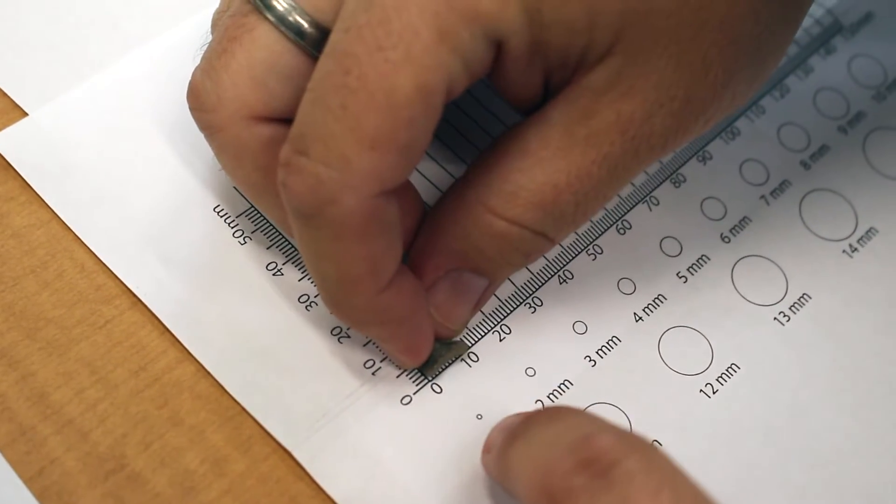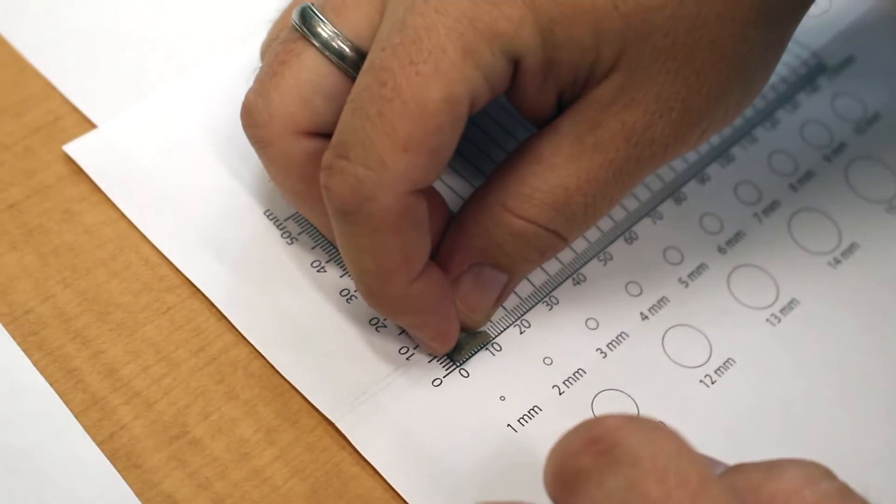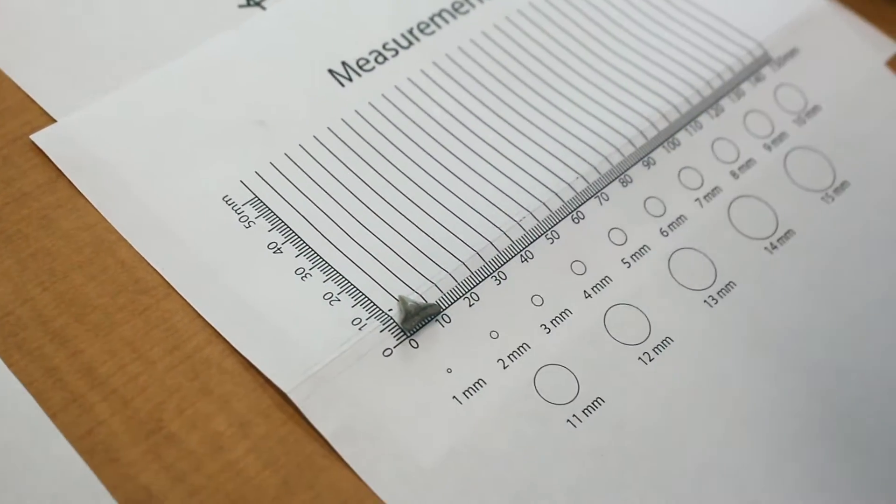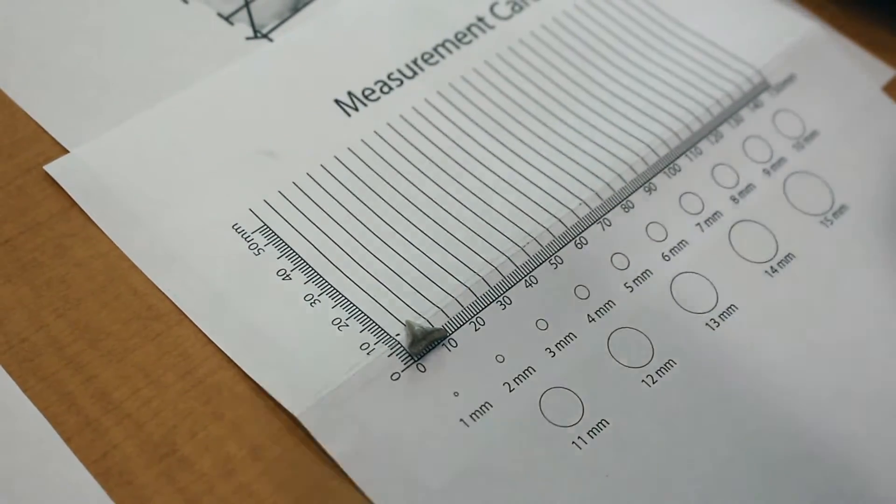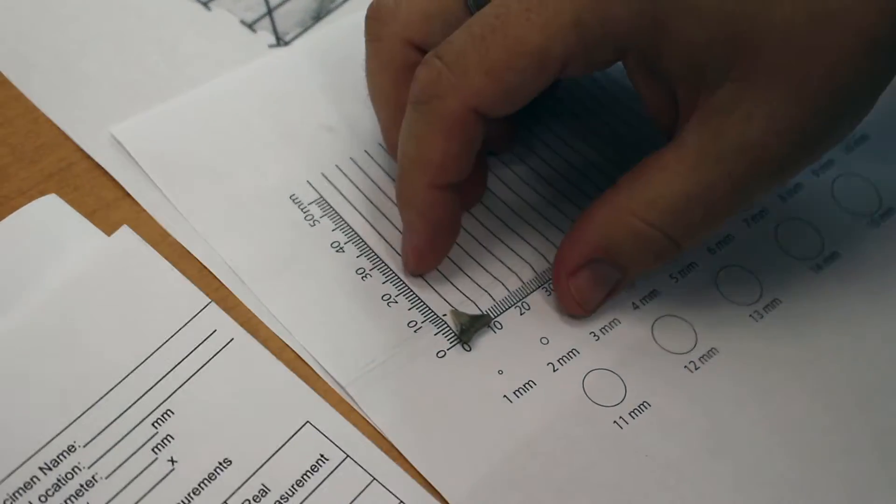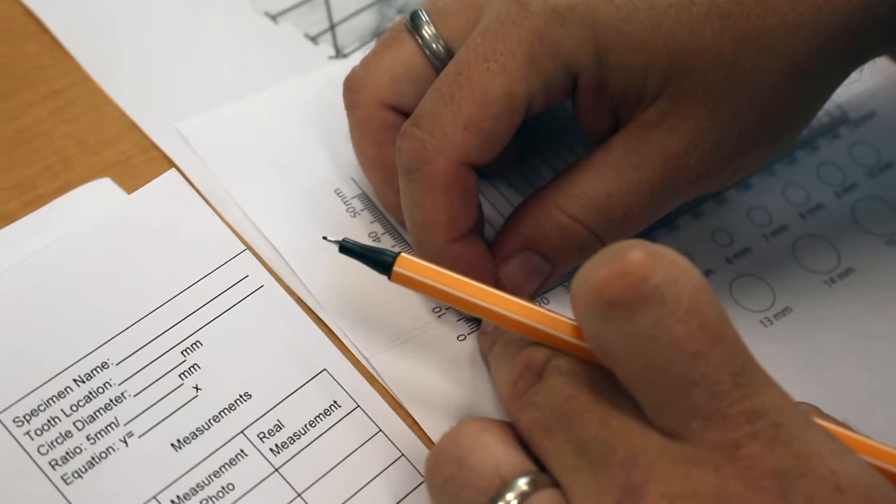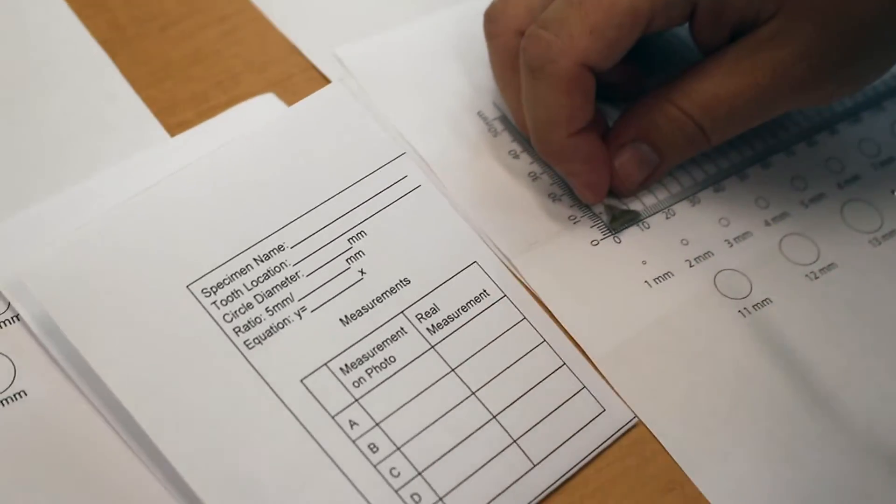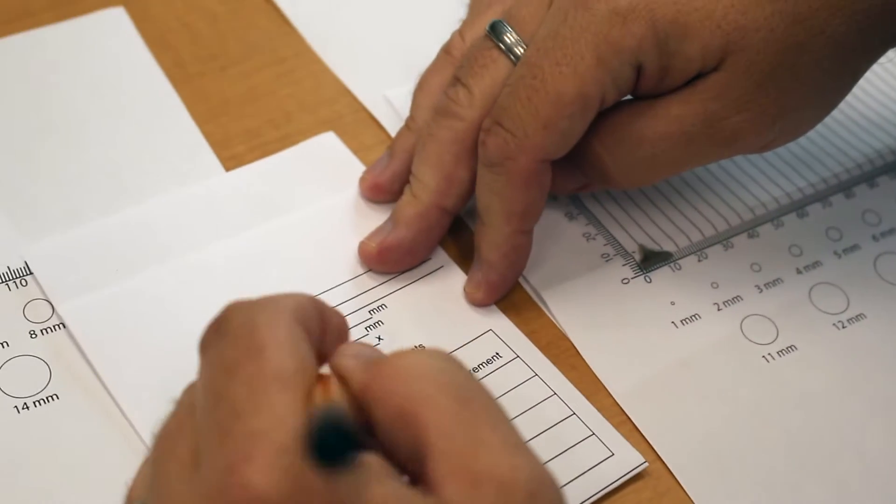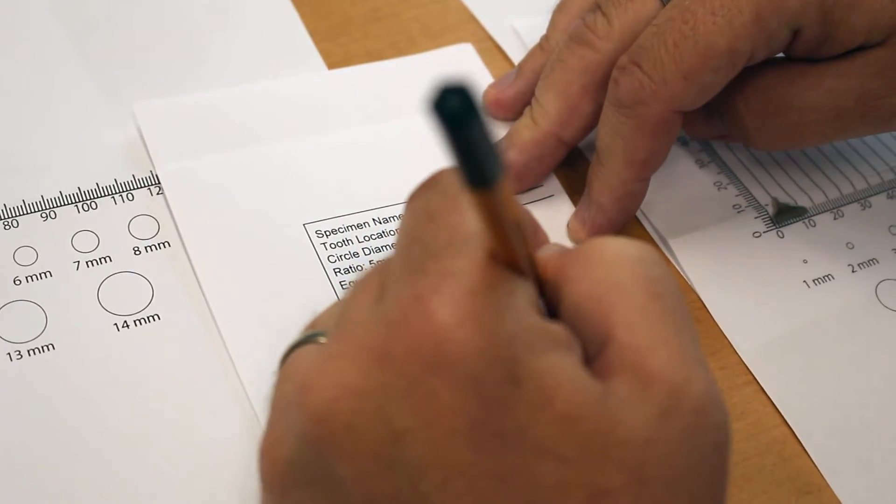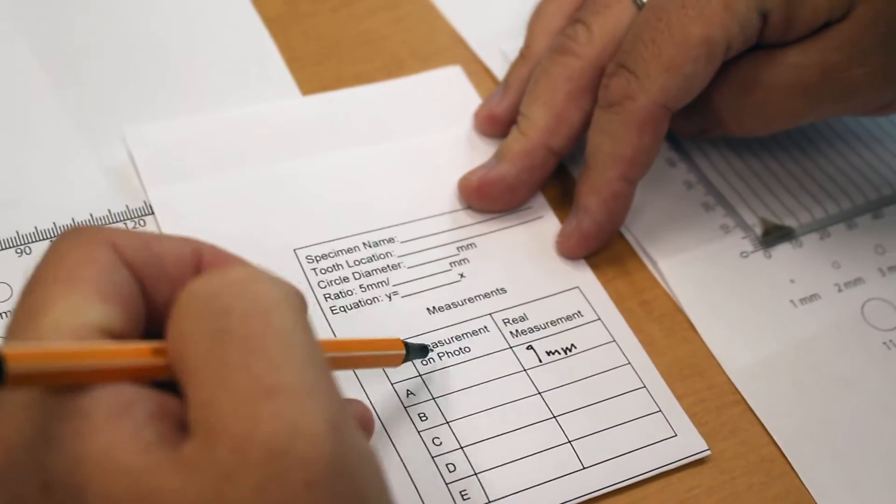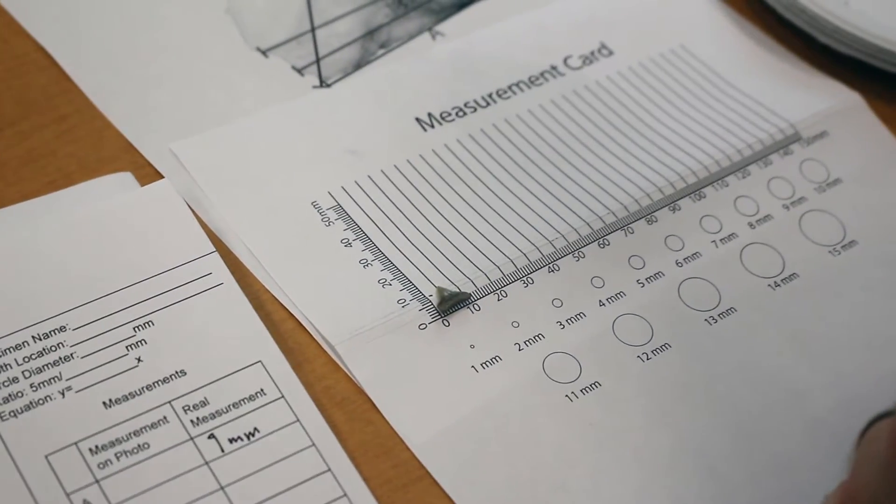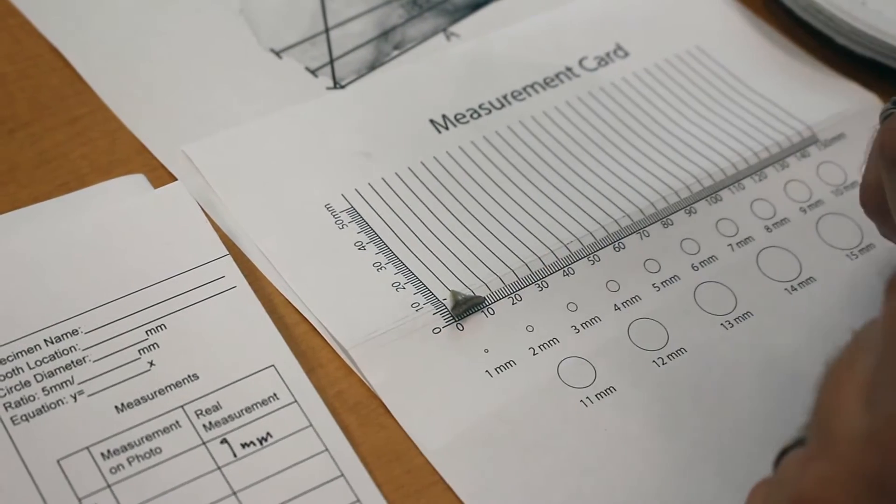And you're just going to lay it on there and write down your measurements on a measurement card. So we have our A measurement here is 9 millimeters. And this is the real measurement. We're not converting a photo. You would also be putting this into the online Google form if you're using that.